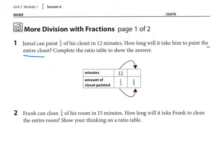To move from one-fifth to one whole, I need multiplication. I'm going to multiply one-fifth by 5 — that gets to one whole. I'm going to do the same on top: 12 times 5. I know that 12 times 5 is 60, so I will write in 60. Therefore, the answer to how long will it take him to paint the entire closet is 60 minutes.